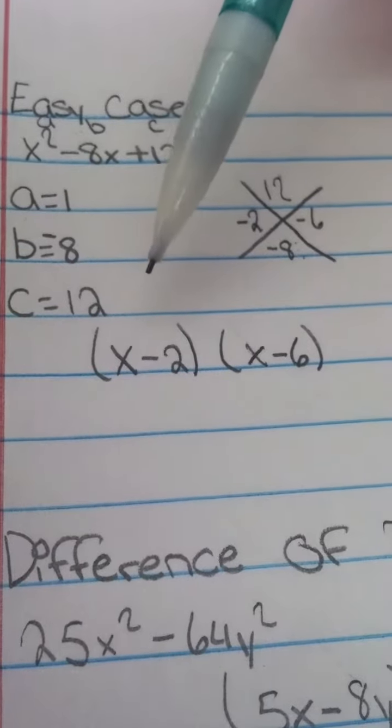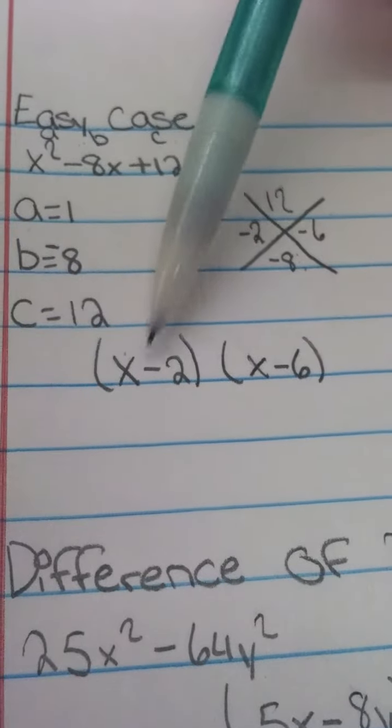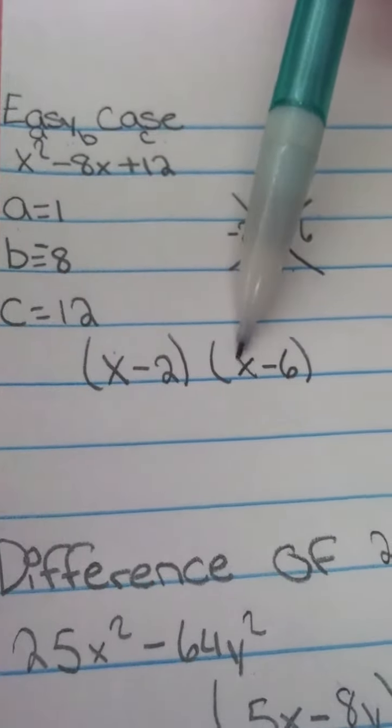And so for your easy case, it will be x minus 2 and x minus 6.